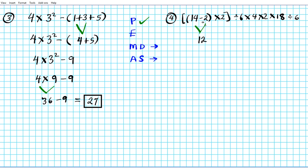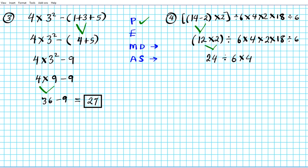That inner parenthesis has been simplified completely. So we have 12 times 2 with the outer parenthesis, divided by 6 times 4 times 2 times 18 divided by 6. 12 times 2 is 24, so we're done with the parenthesis step. We now have 24 divided by 6 times 4 times 2 times 18 divided by 6. Multiplication and division are at the same level, so we execute them from left to right.